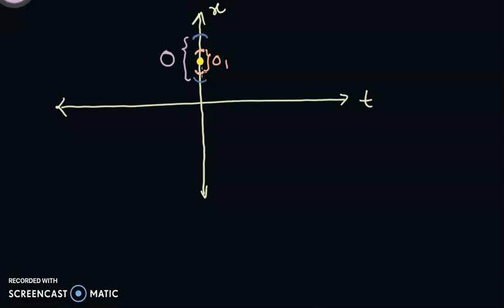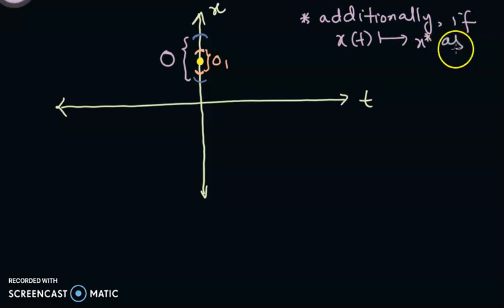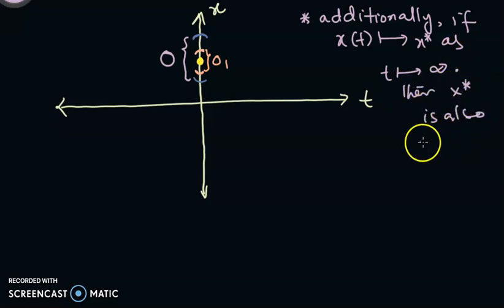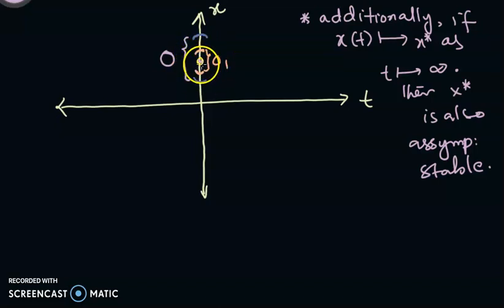Now what about asymptotic stability? Additionally, if x(t) converges to x* as t goes to infinity, then x* is also asymptotically stable. So, along with stability, if you take any initial data in interval O₁ and not only does the solution remain inside O₁ but it also converges to the equilibrium point, then the equilibrium point is not only stable but also asymptotically stable.